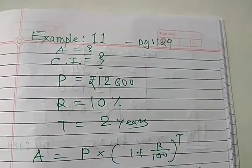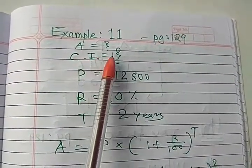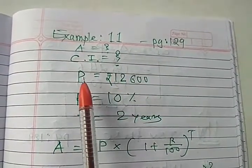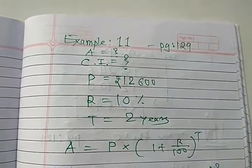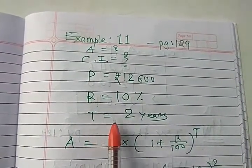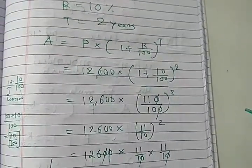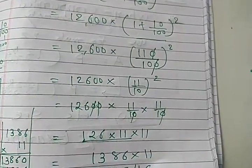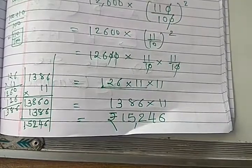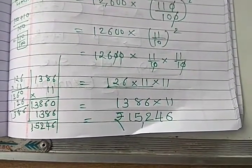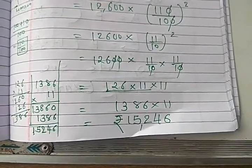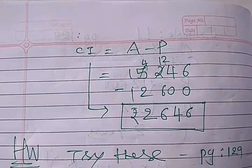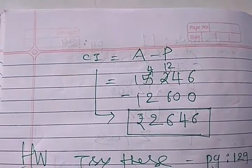Now example number 11, page number 129. Here amount is equal to question mark, you have to find out compound interest question mark. Principal amount 12,600 is given, rate of interest 10% is there, and term is 2 years. So like this way you can put the value. And as per given instructions you have to do the calculations, you will get 15,246 rupees. So now CI is equal to A minus P. So 15,246 minus 12,600, you will get 2,646 rupees.